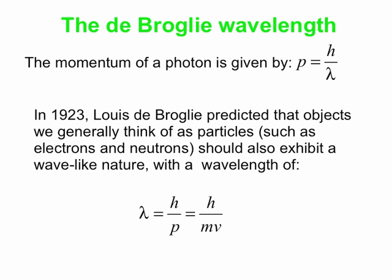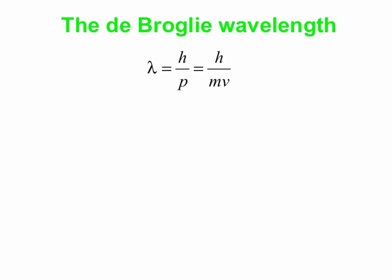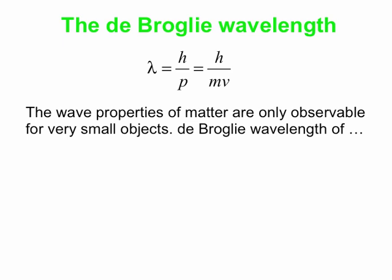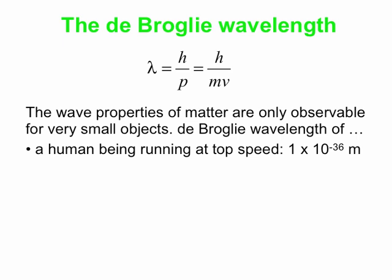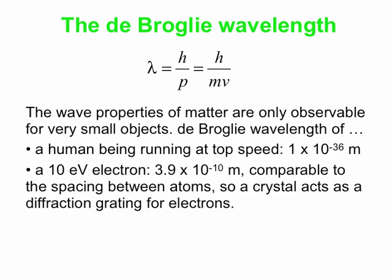Note that there is only a wavelength when the thing is moving. The wave properties of matter are only observable for very small objects. H of course is a very, very small thing: 6.626 times 10 to the minus 34 joule seconds. So the de Broglie wavelength of, for instance, a human being running at top speed is on the order of 10 to the minus 36 meters. On the other hand, for a 10 electron volt electron — an electron accelerated from rest through a potential difference of 10 volts — the de Broglie wavelength turns out to be pretty close to 4 times 10 to the minus 10 meters. That turns out to be comparable to the spacing between atoms, so a crystal can actually act as a diffraction grating for electrons. These wavelengths matter for tiny things like electrons; for things like us, they generally don't matter at all.